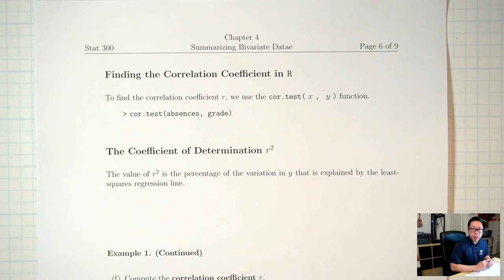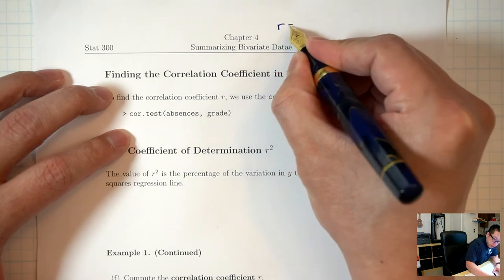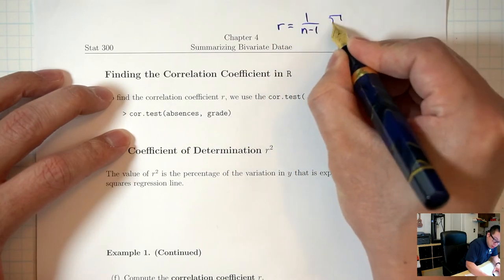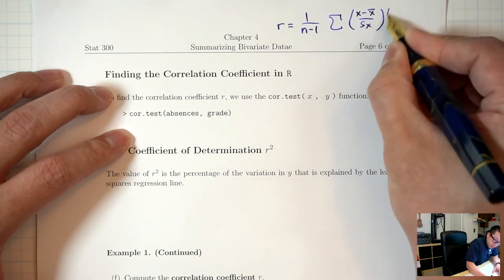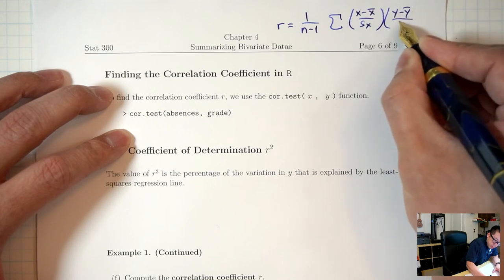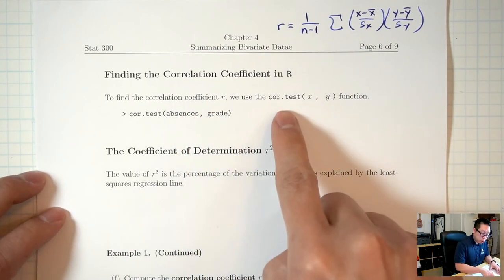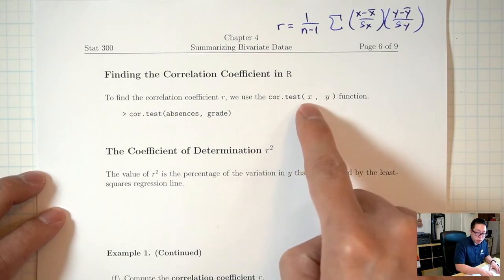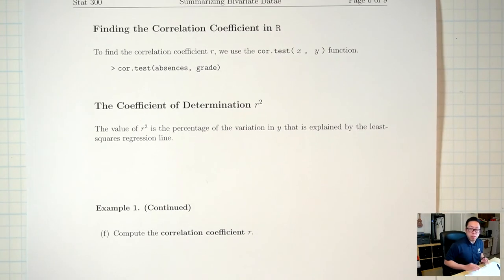How do we find the correlation coefficient R? There is a formula, but it's a pain to do by hand. We'll use R. The command is cor.test(x, y) — whatever you named your x variable comma your y variable.